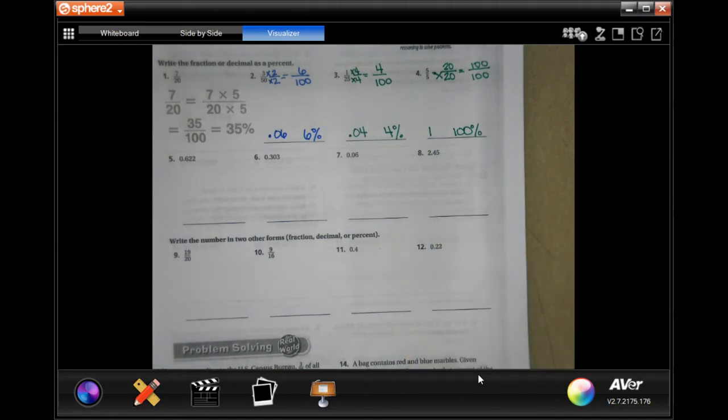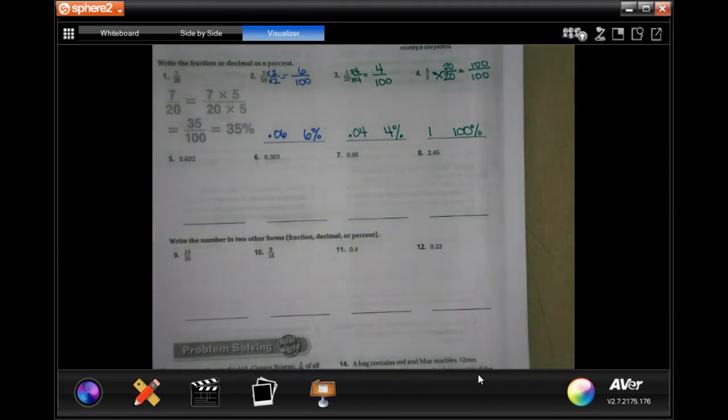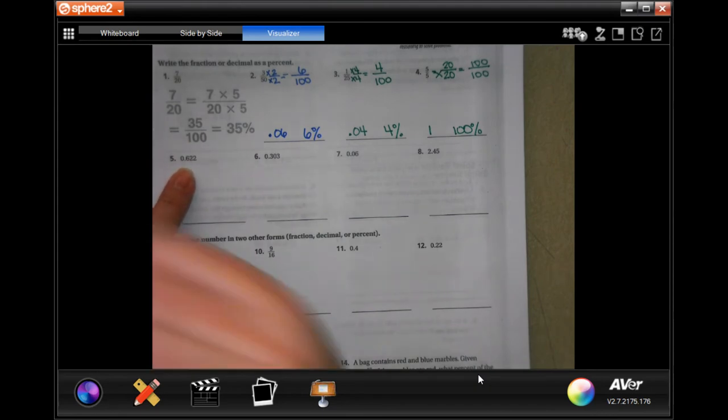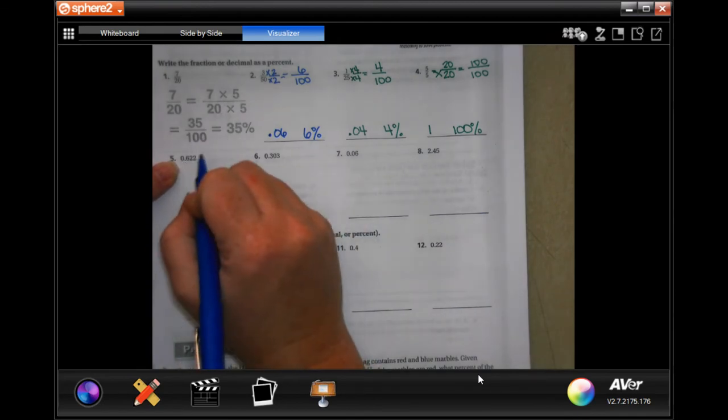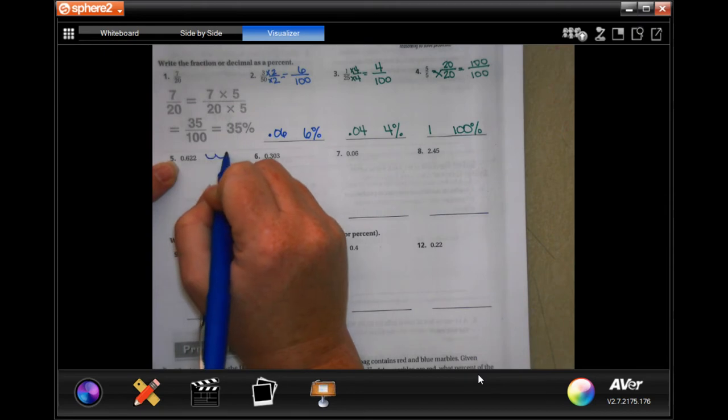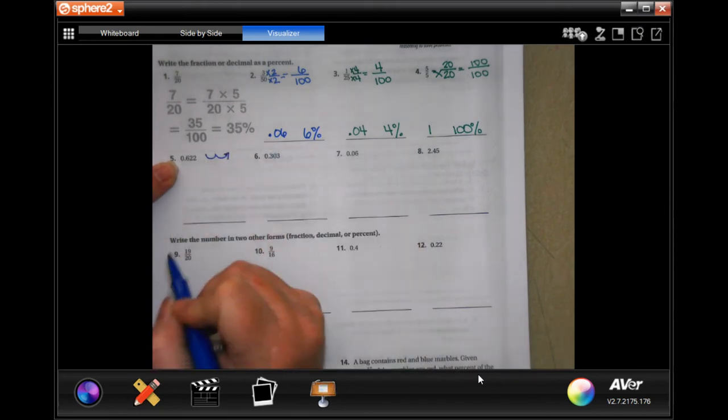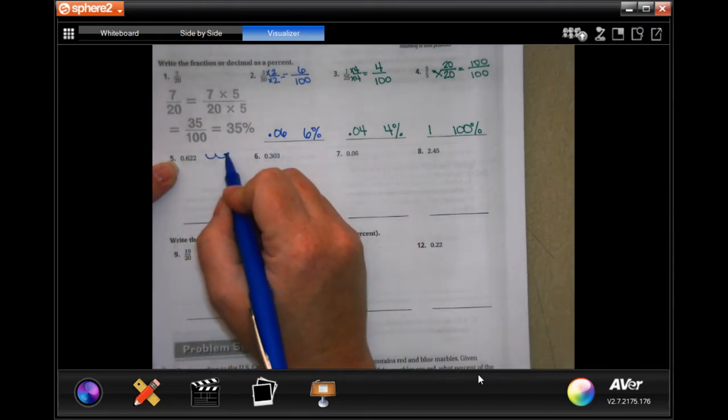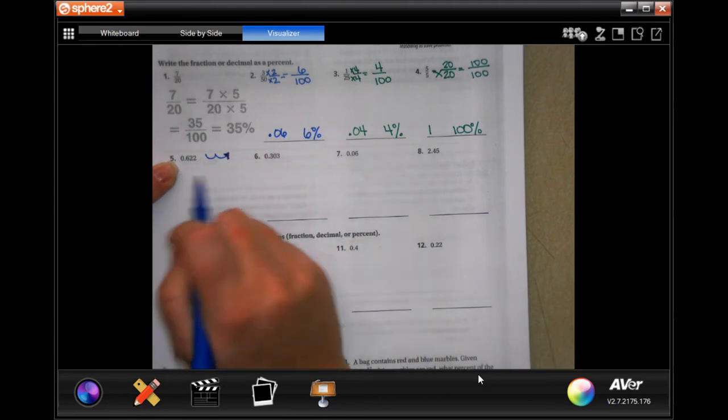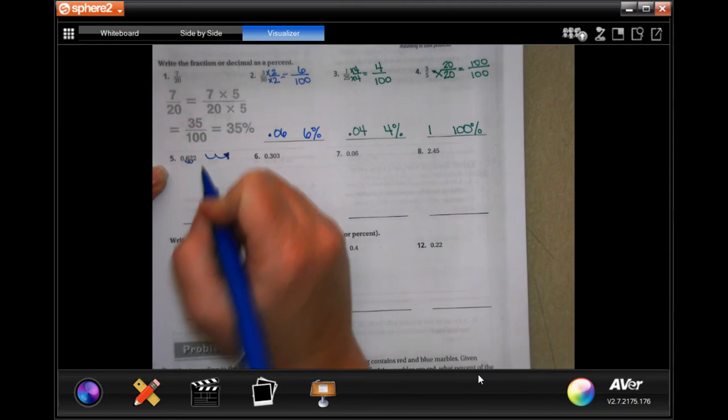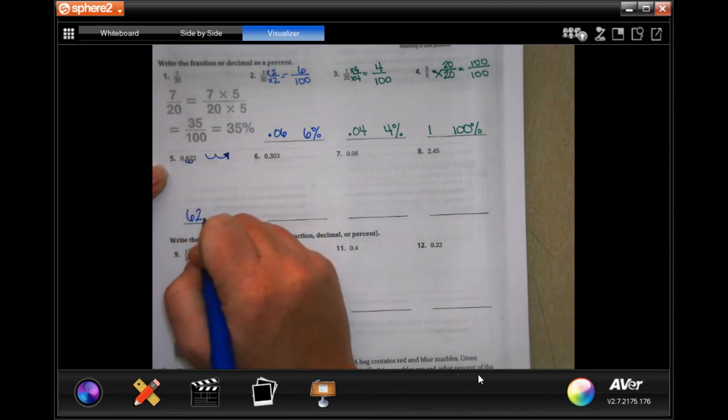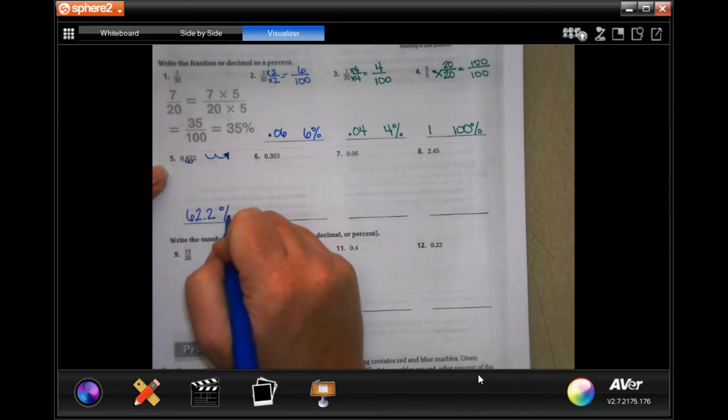All right. So, we're going to go down, and we are going to do... So to get decimals to a percent, all you do is you move the decimal two times that way, two times to the right. So, on this one, 1, 2, 62.2 percent.